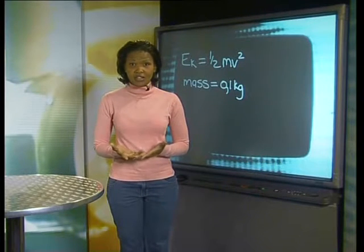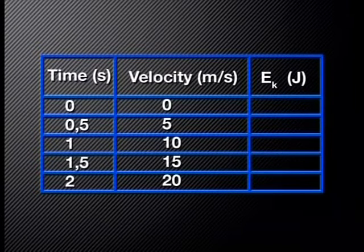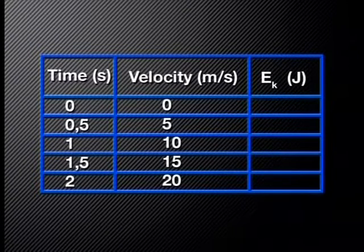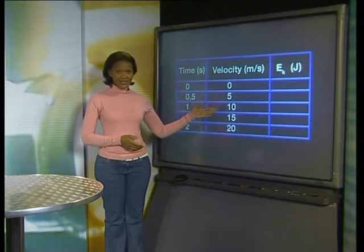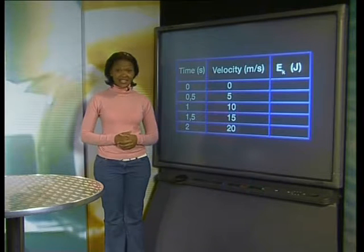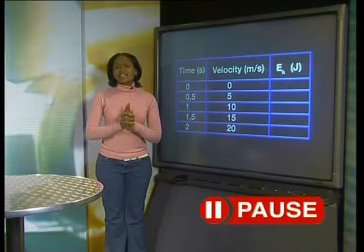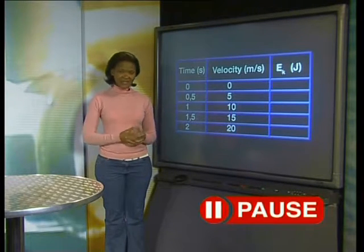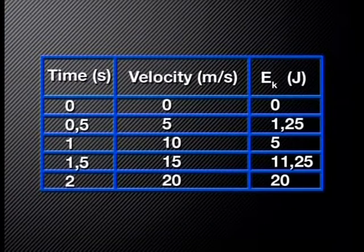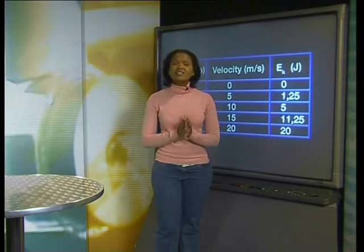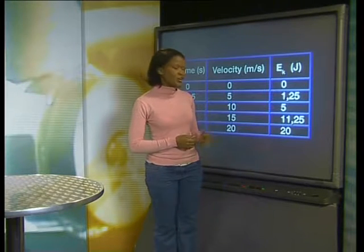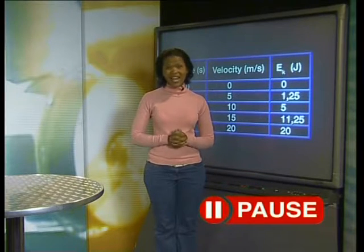This change would be the same for each half second of the ball's fall. Starting from 0, the velocity of the ball would increase by 5 to 5 m per second after 0.5 seconds, then increase by 5 again to be 10 m per second at 1 second. At 1.5 seconds the velocity is 15 m per second, and at 2 seconds the velocity is 20 m per second. Now can you calculate the kinetic energy? Notice the kinetic energy increased by 1.25 joules in the first half second, but increased more in the second half second. The biggest increase was in the last half second when EK increased from 11.25 joules to 20 joules.